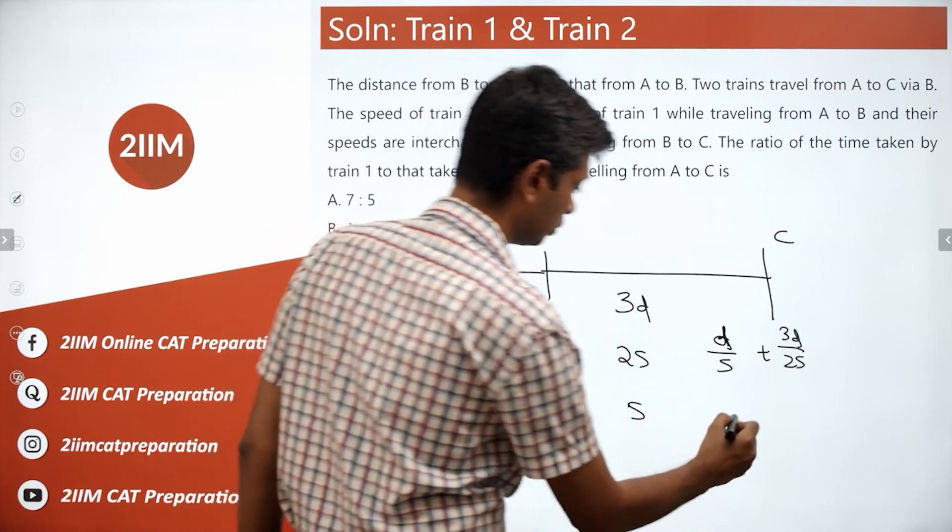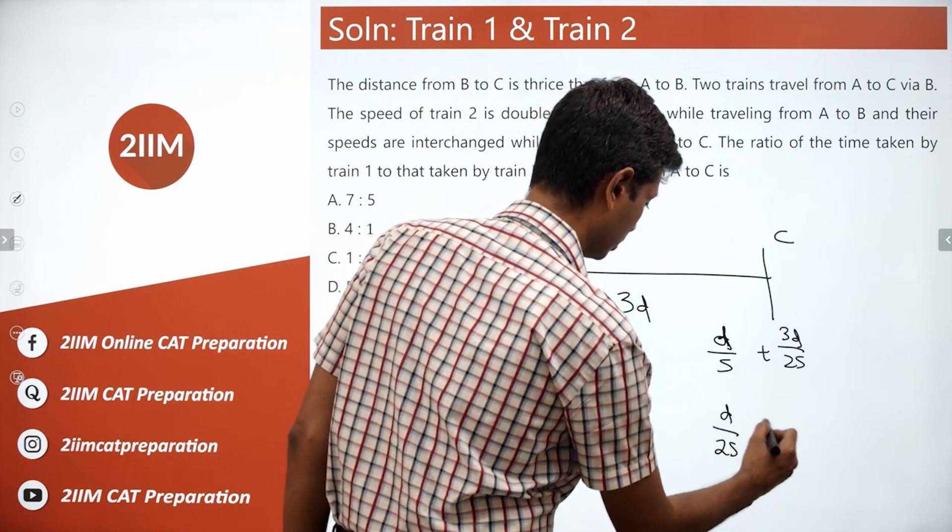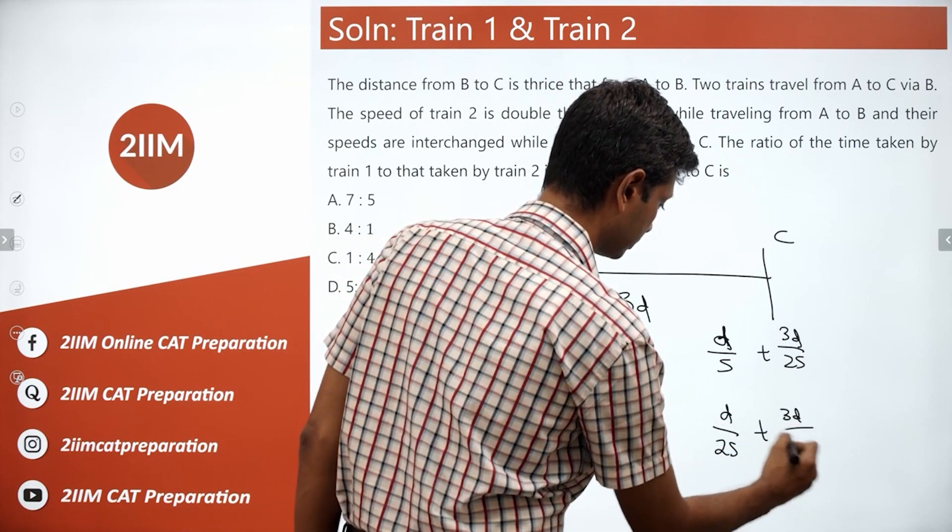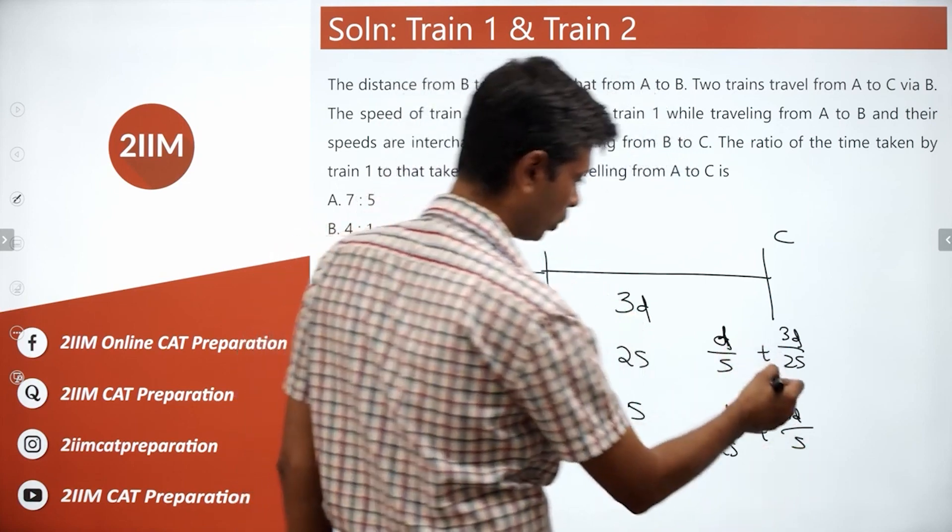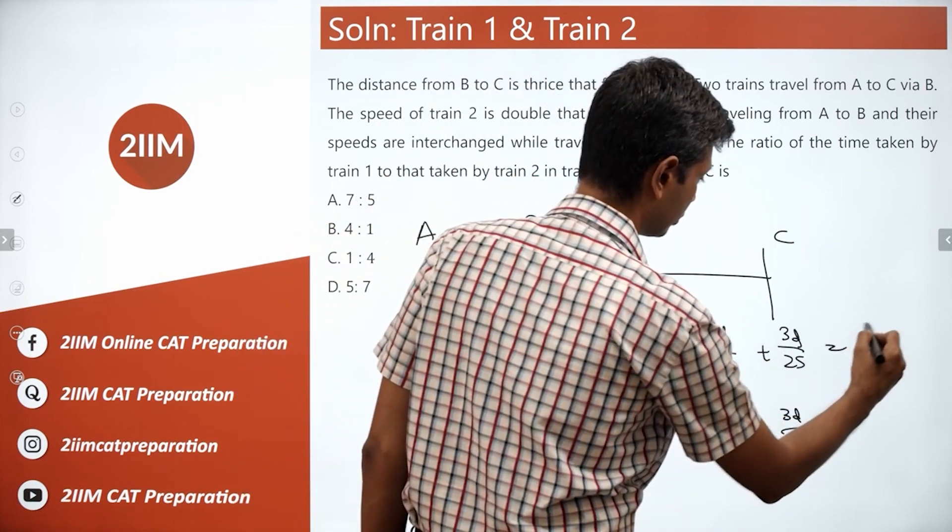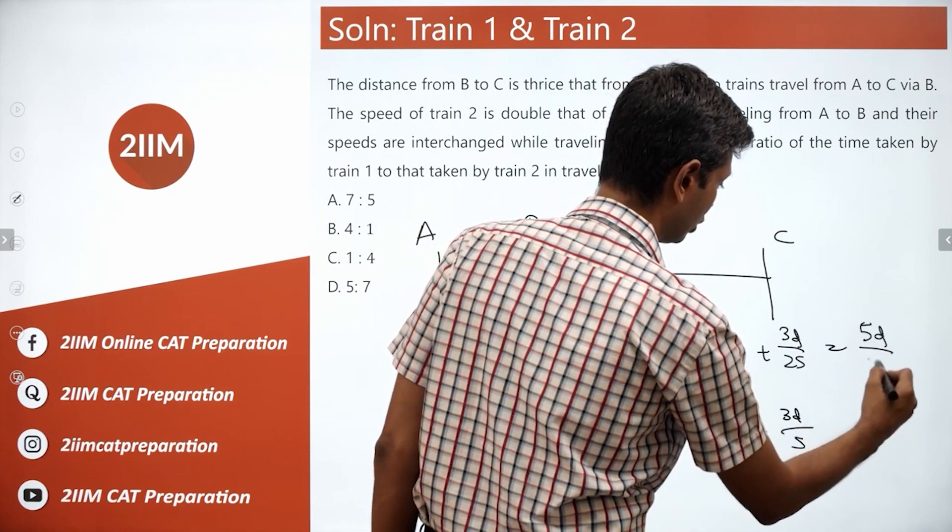By train 2 would be D by 2S plus 3D by S. LCM is 2S, this is 2D by 2S. This is 5D by 2S.